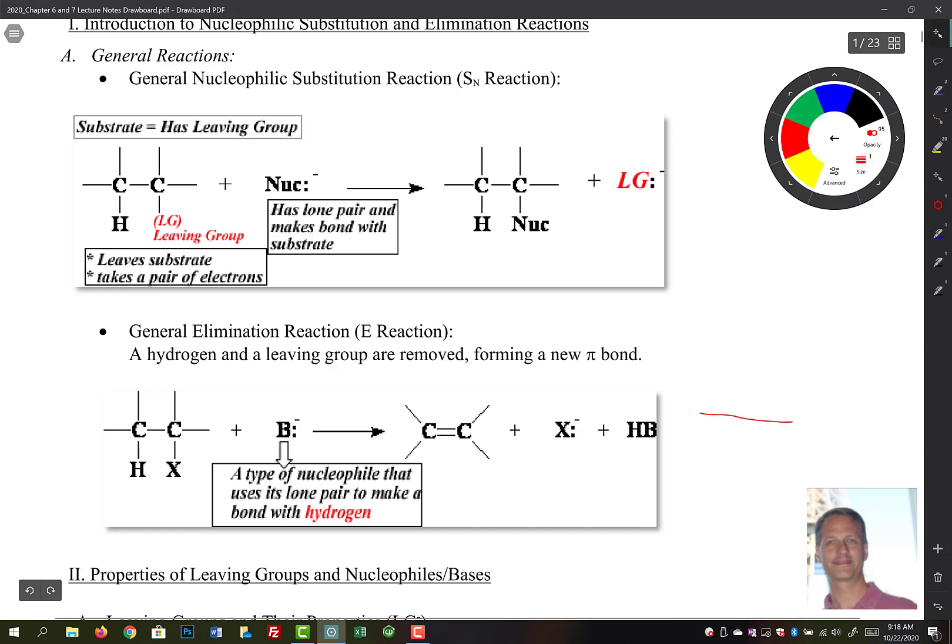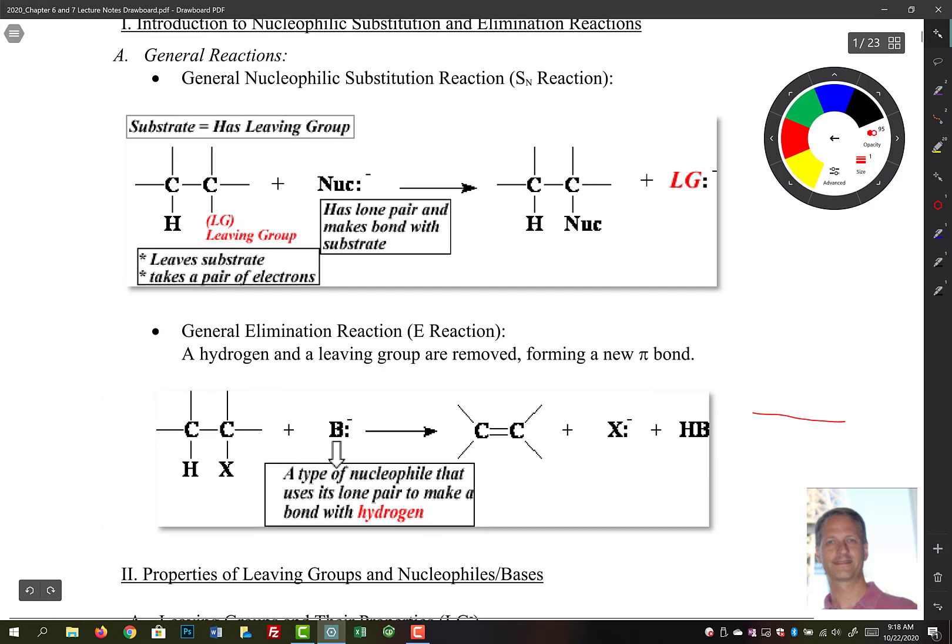Now, if we look over here, we see the general reaction here for nucleophilic substitution. So we call that an SN. N is for nucleophilic, S is for substitution. We will look at two of these reactions, SN1 and SN2.